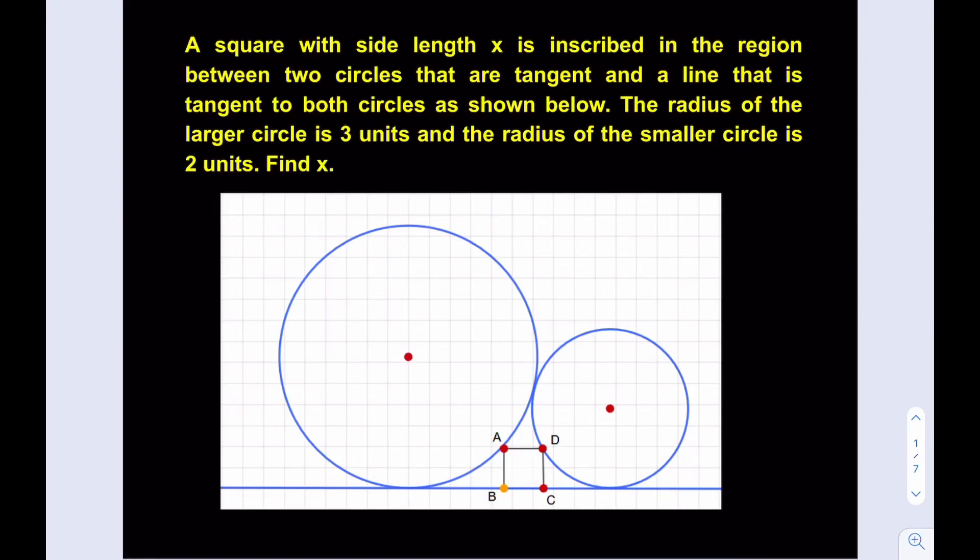Hello everyone. In this video, we're going to be solving an awesome geometry problem that I don't think appears in any type of math literature. I haven't seen it in any books or websites, but there is a similar problem with identical circles. So at this point, if you want to pause the video, you can try the problem yourself first. It says a square with side length x is inscribed in the region between two circles that are tangent, and a line that is tangent to both circles as shown below. The radius of the larger circle is 3 units and the radius of the smaller circle is 2 units, and we're supposed to find x.